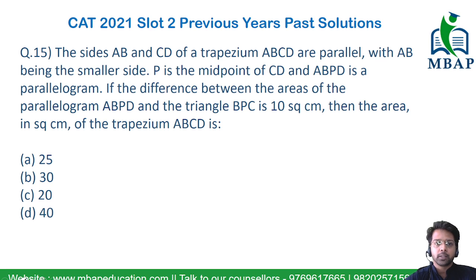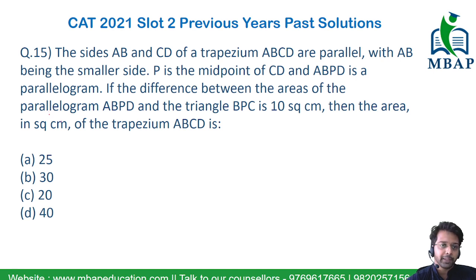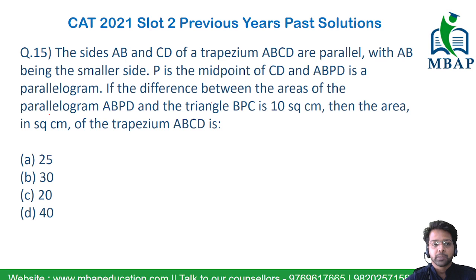The question says: the sides AB and CD of a trapezium ABCD are parallel, with AB being the smaller side. P is the midpoint of CD, and ABPD — which is a part of the trapezium ABCD — will be a parallelogram. If the difference between the areas of the parallelogram ABPD and the triangle BPC is 10 square centimeters, find the area of the entire trapezium ABCD.